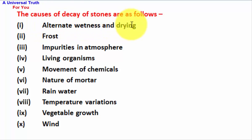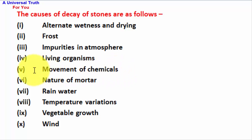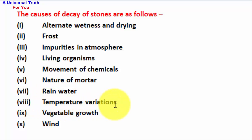1. Alternate wetness and drying. 2. Frost. 3. Impurities in atmosphere. 4. Living organisms. 5. Movement of chemicals. 6. Nature of mortar. 7. Rain water. 8. Temperature variations. 9. Vegetable growth. 10. Wind. Let's elaborate all these points.